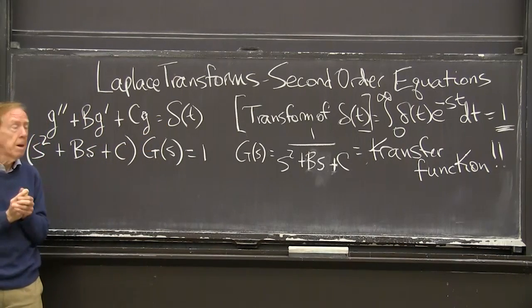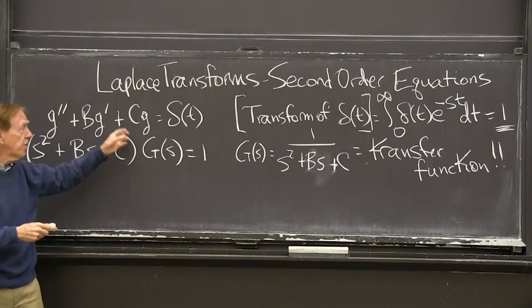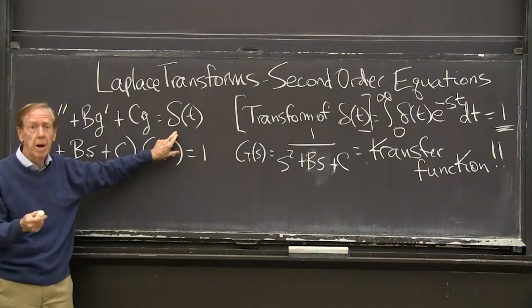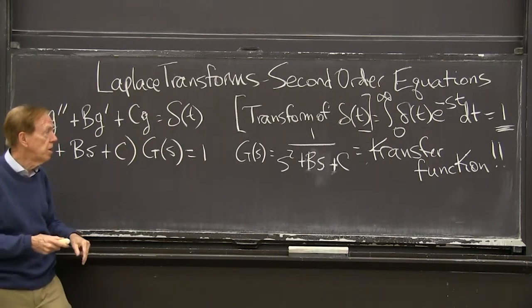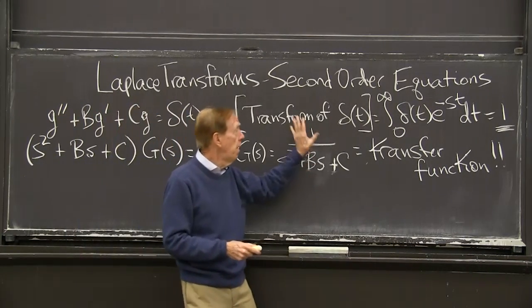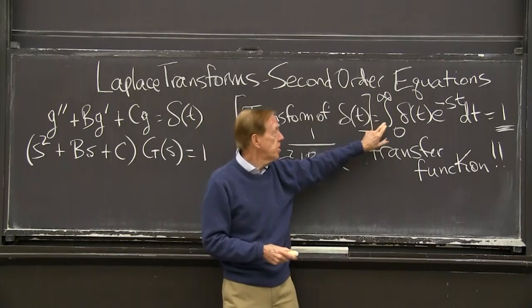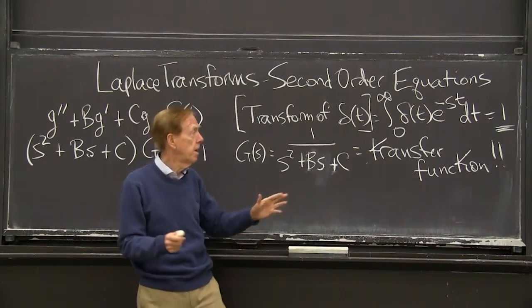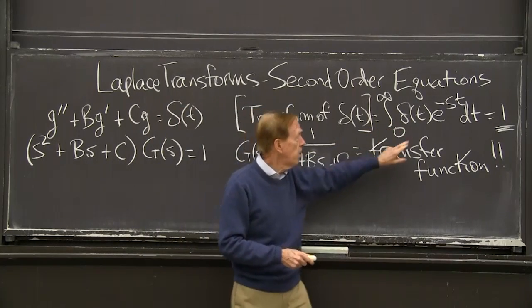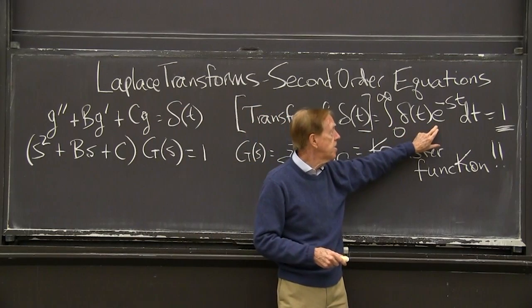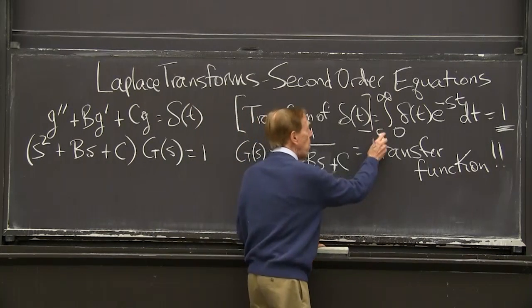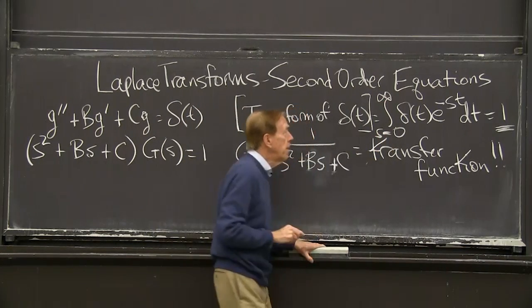So what's the plan? We want to take the transform of every term. We have to check what is the transform, the Laplace transform of the delta function. You remember the definition of the transform? It's this integral. You take your function, whatever it is, here delta, multiply by e to the minus st and integrate, s equals 0 to infinity.